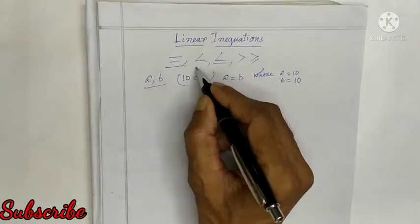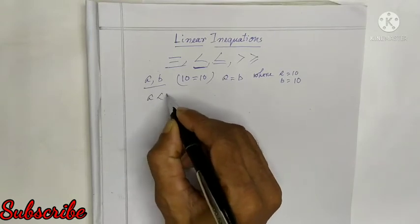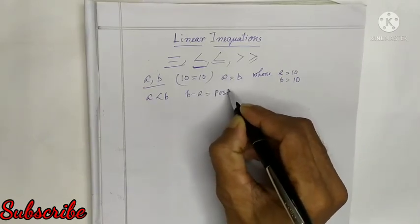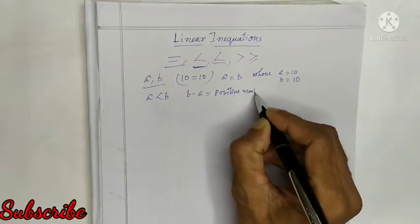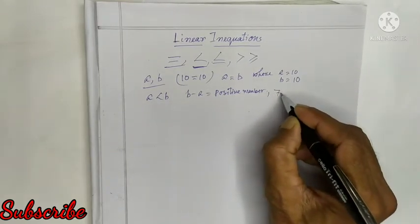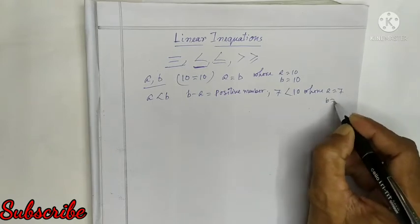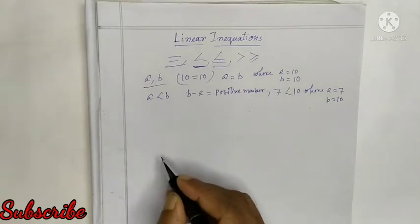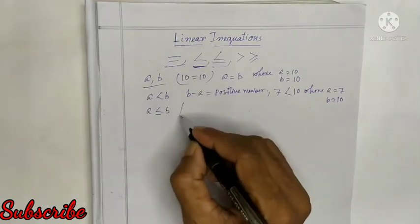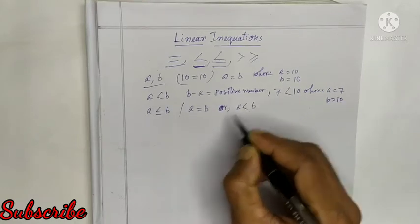This is the less than sign. If A is less than B, then B minus A equals a positive number. For example, where A equals 7 and B equals 10. Also, A less than or equal to B means A equals B or A is less than B.